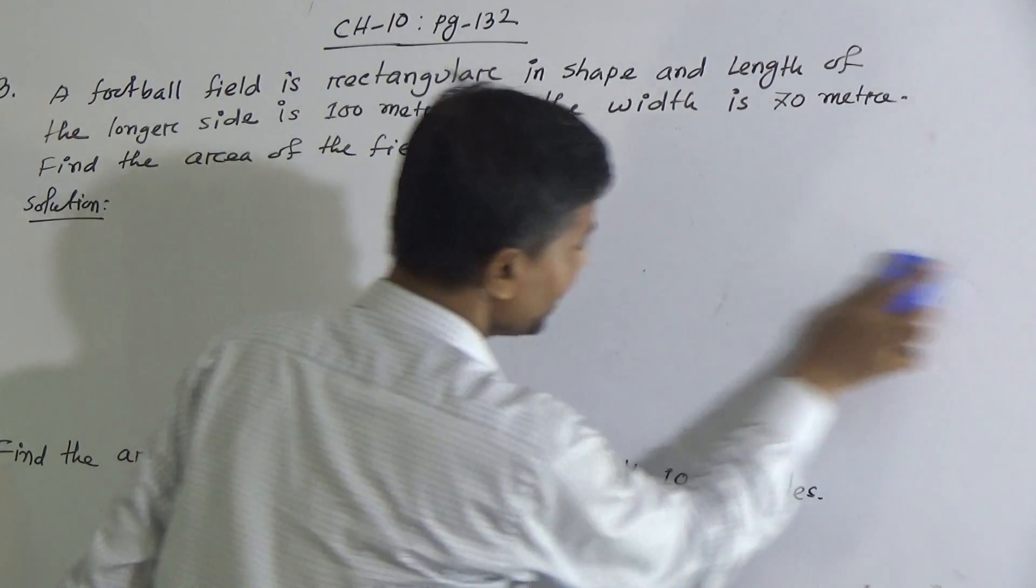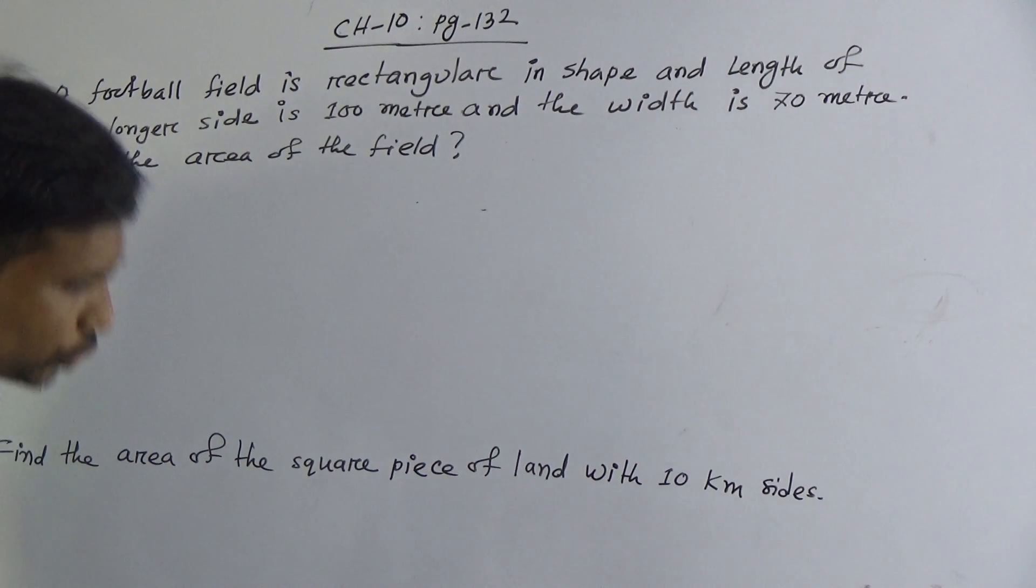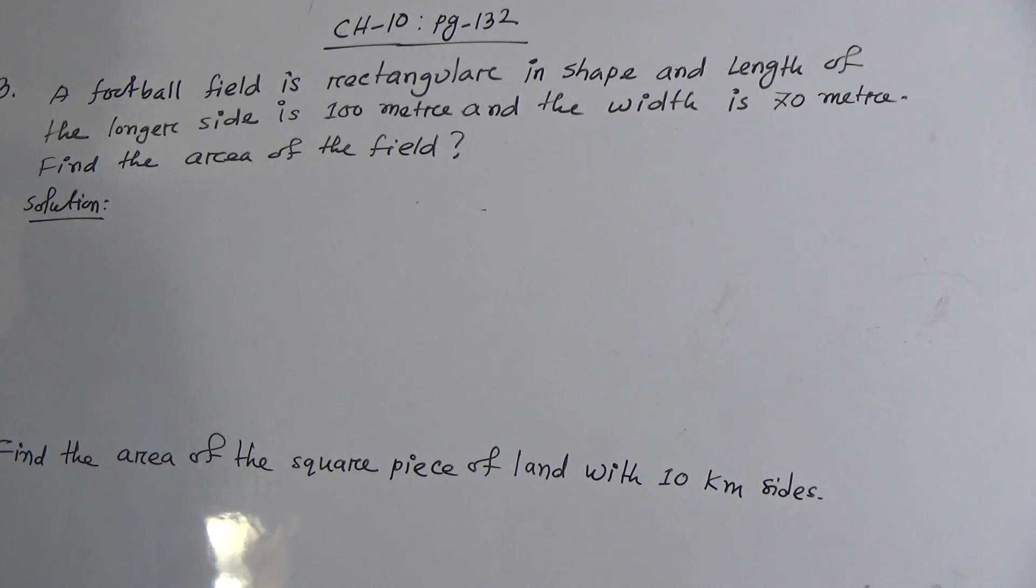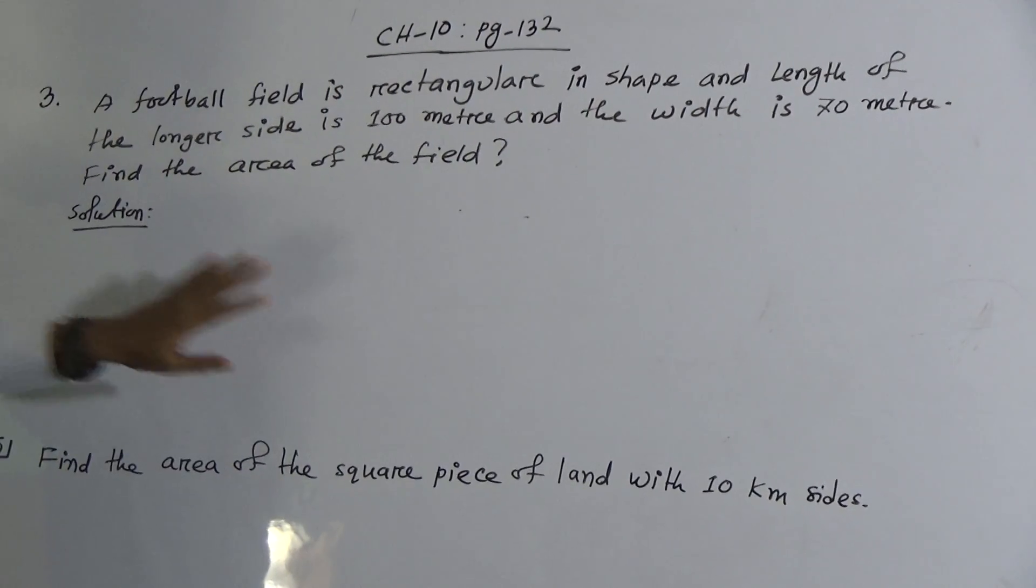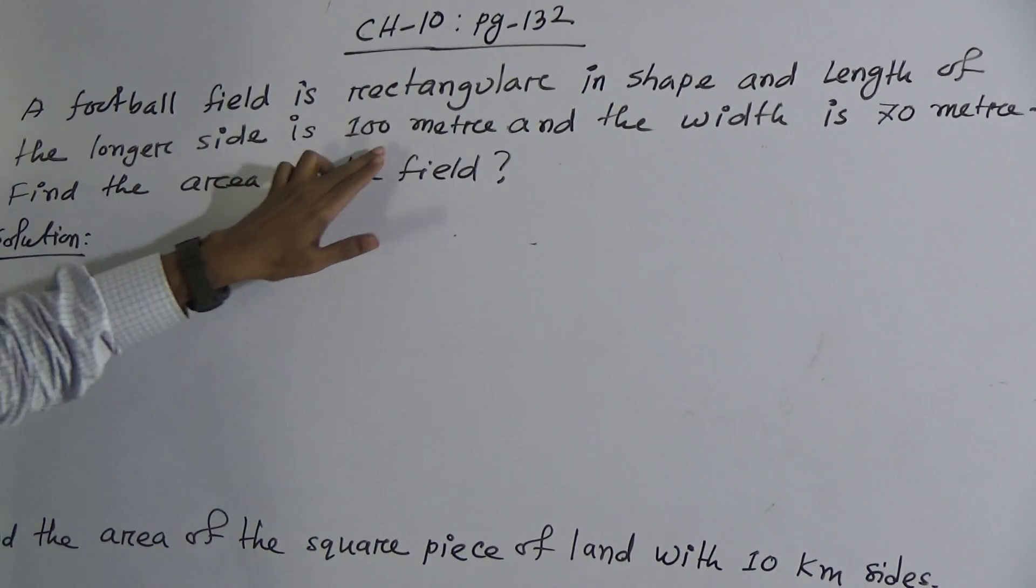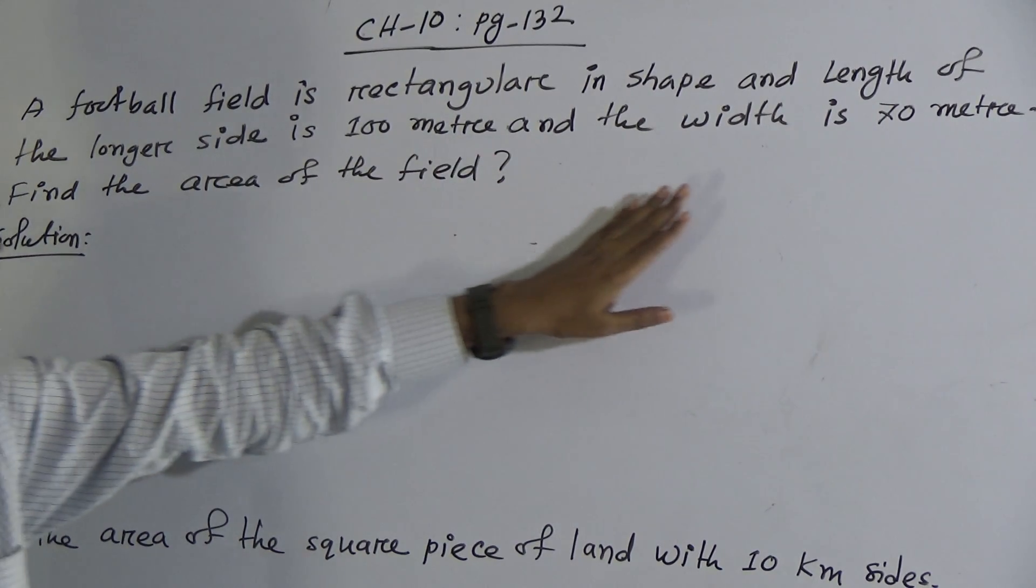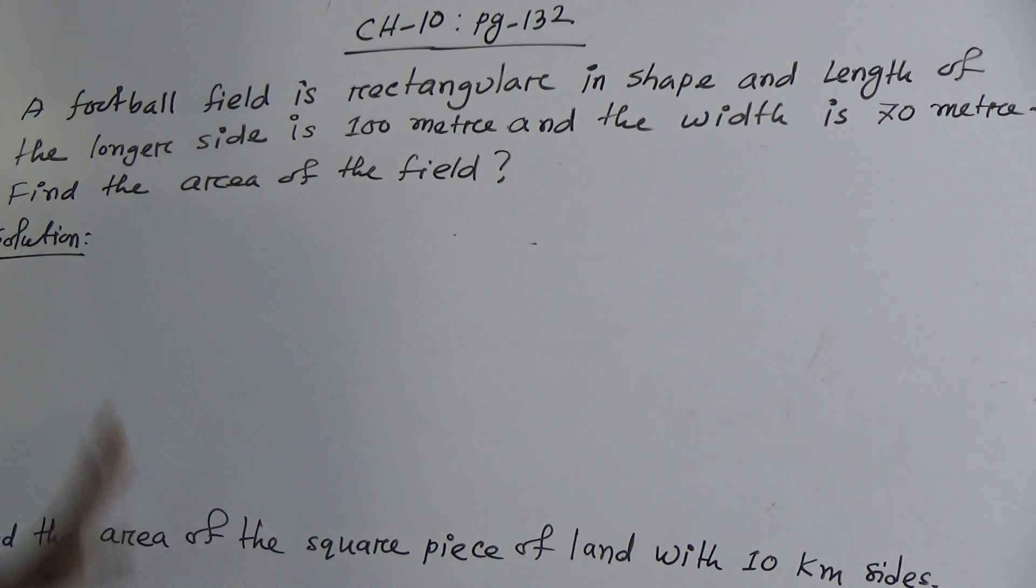Now, according to this formula, I will solve these two problems. Look, question number three: a football field is rectangular in shape and length of the longer side is 100 meters and the width is 70 meters. Find the area of the field.